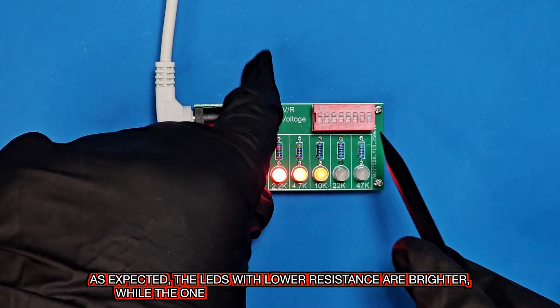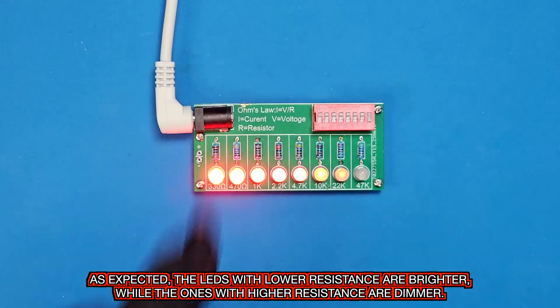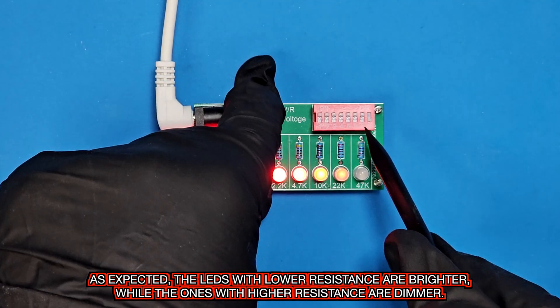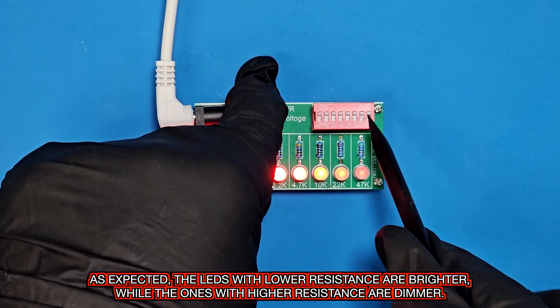As expected, the LEDs with lower resistance are brighter, while the ones with higher resistance are dimmer.